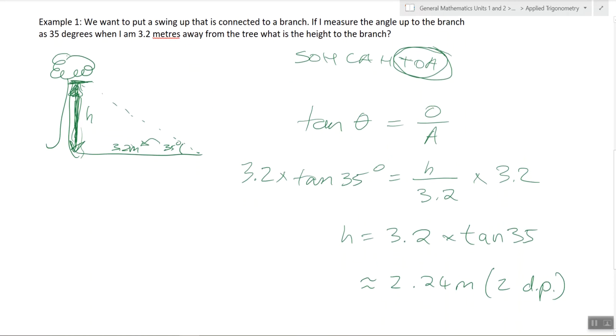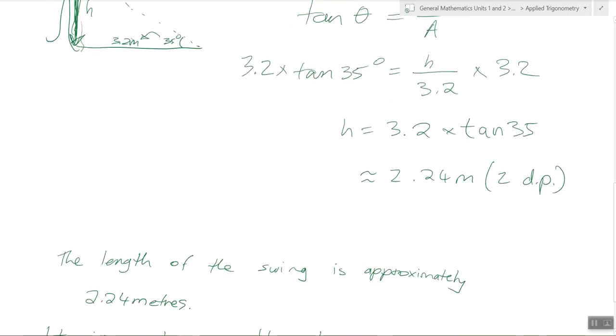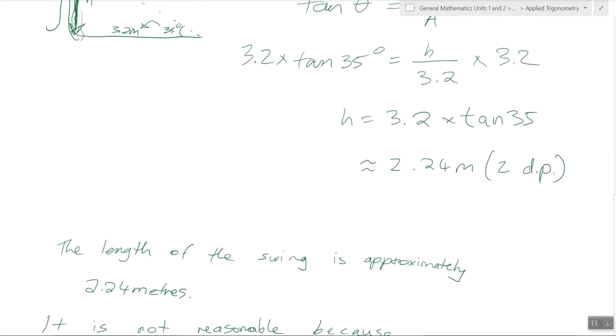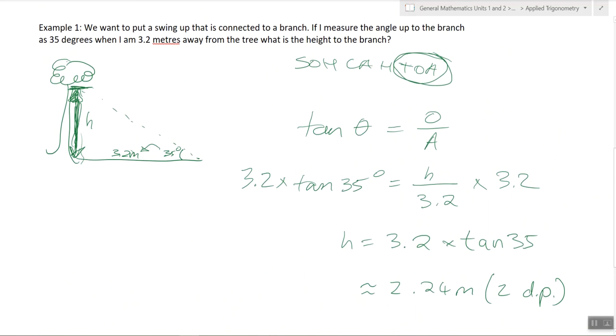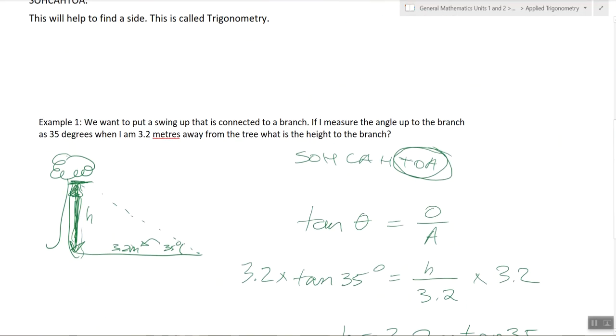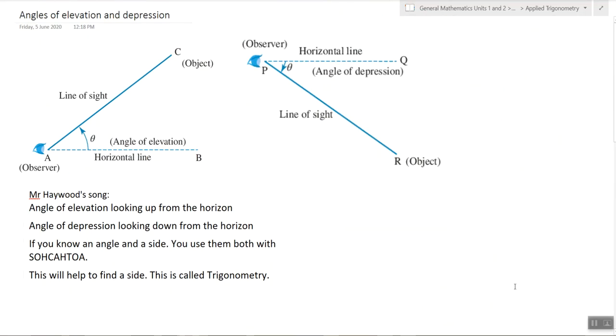And this is a context question, it's a worded question, so we need to write a worded answer. The length of the swing is approximately 2.24 meters. And if the question asked us if this was reasonable or not, we would say it's not reasonable. Because of human error, and we don't know if the swing's going to the ground, the question doesn't specify that. So I hope that was helpful. That was an angle of elevation question.